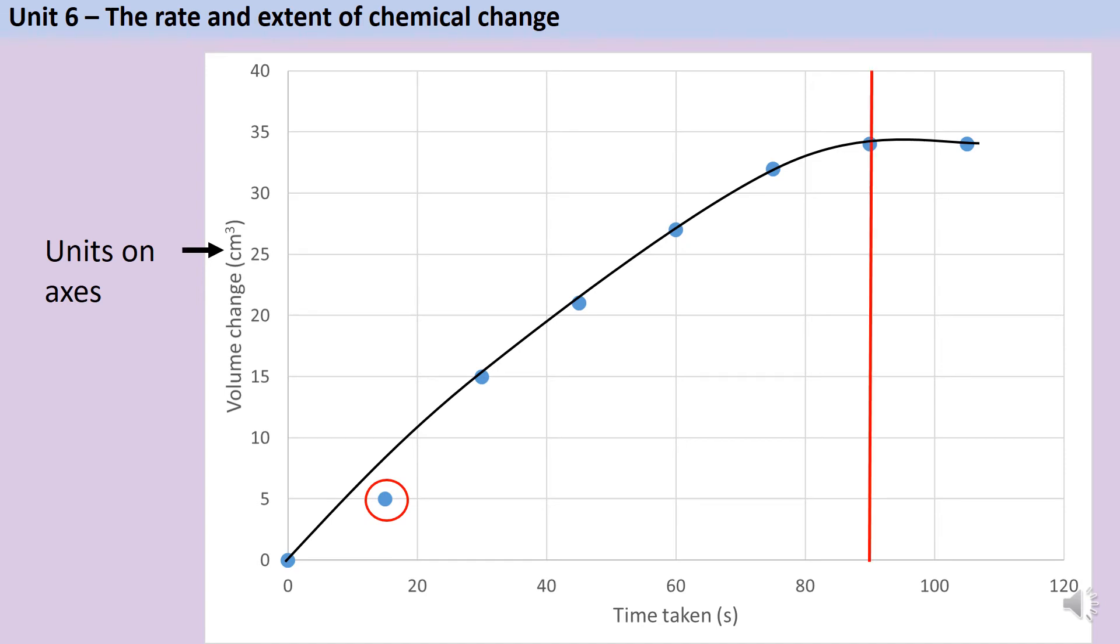So in calculating the rate, I want to go from where the graph becomes flat and plateaus. So to work out the mean rate, I need to know the volume change and divide this by the time. Here my volume change was 34 centimeters cubed, and the amount of time was 90. And I can use those numbers together to calculate the mean rate.